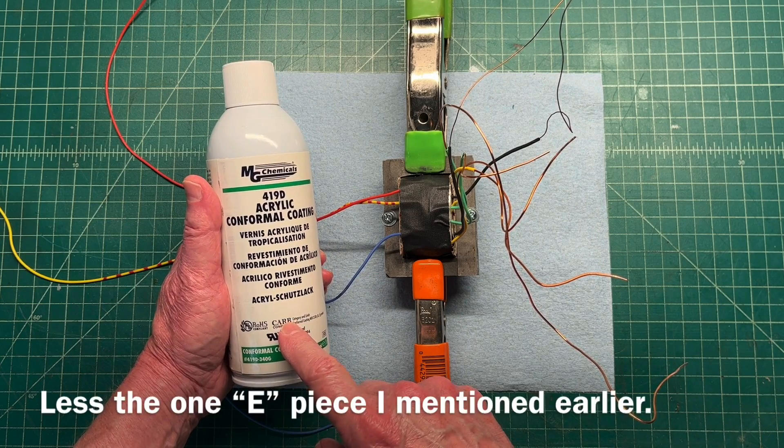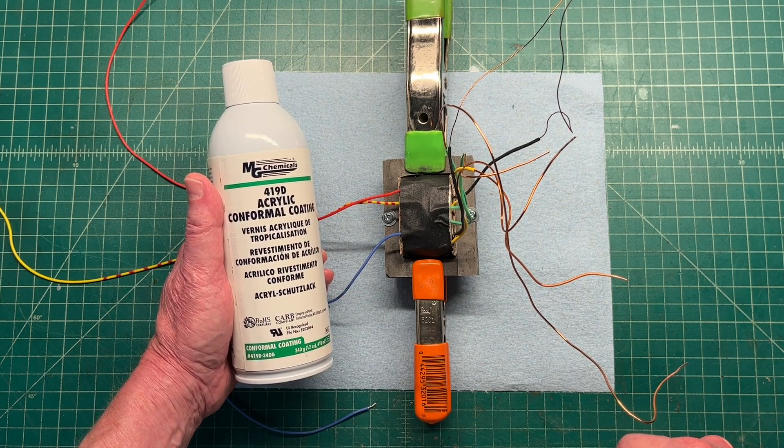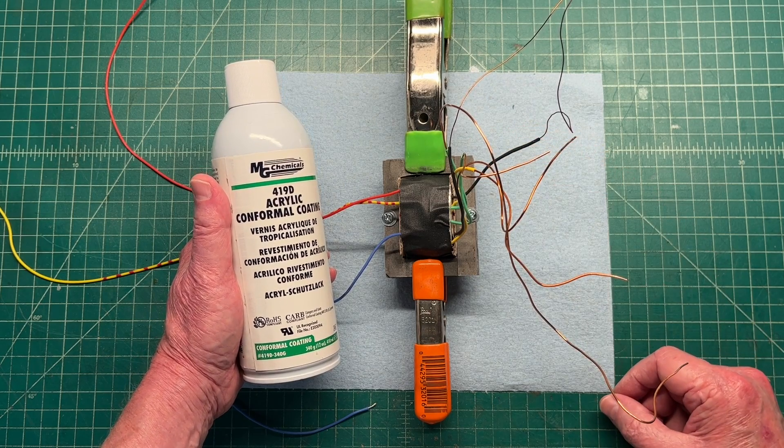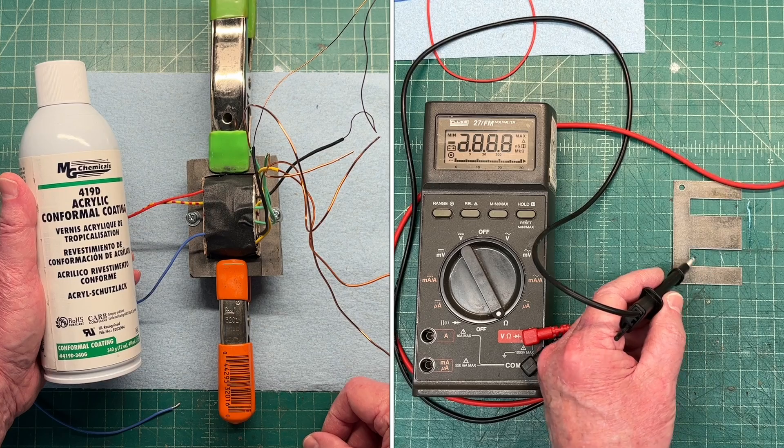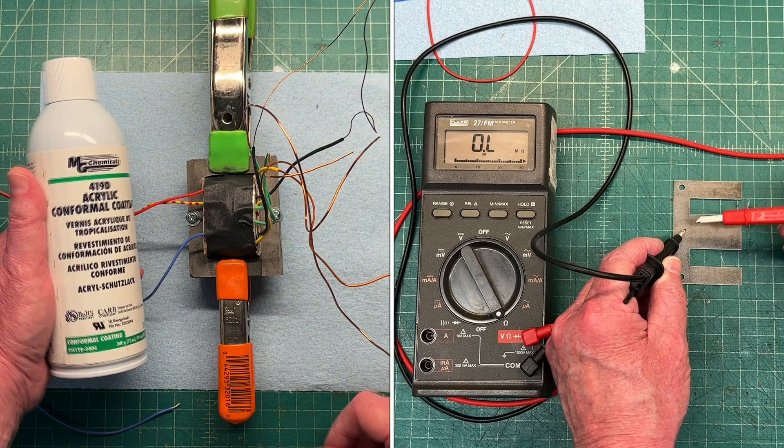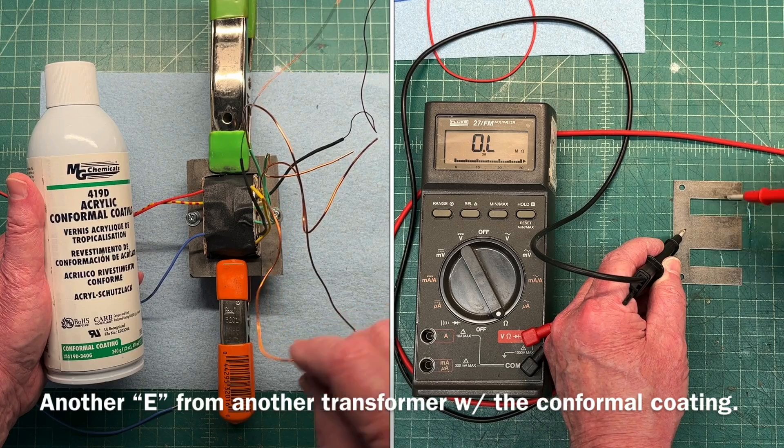After doing the de-rusting and using the conformal coating as well to reduce eddy currents, so they're insulated to a certain degree on both sides, and that's supposed to make the transformer more efficient.